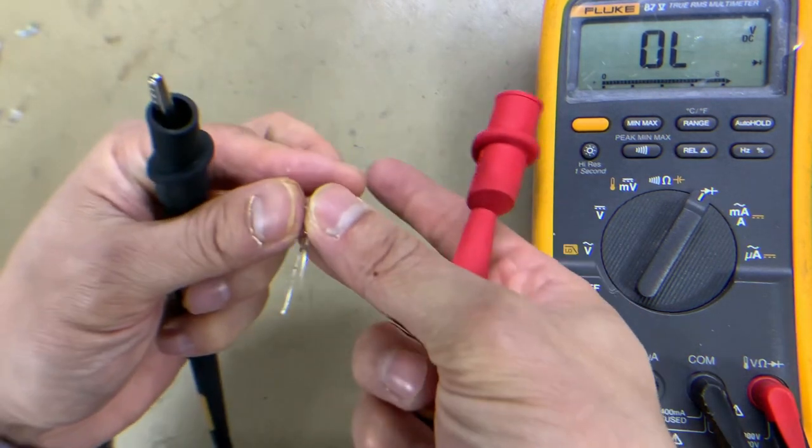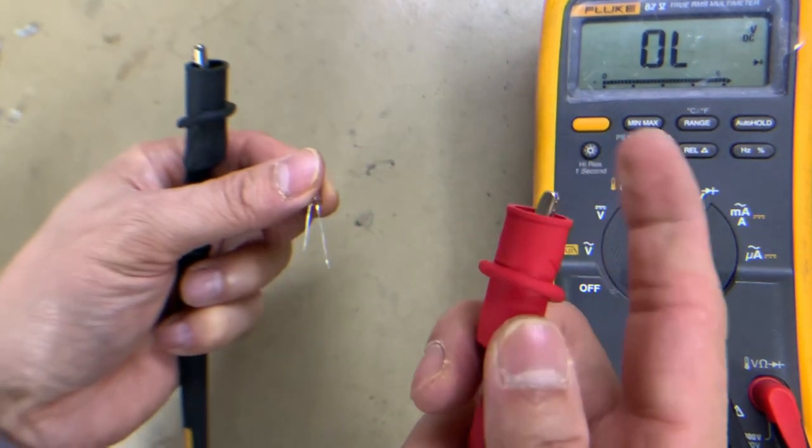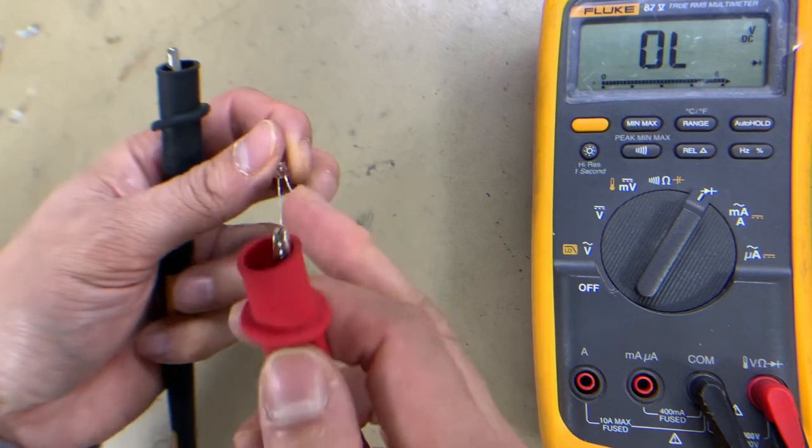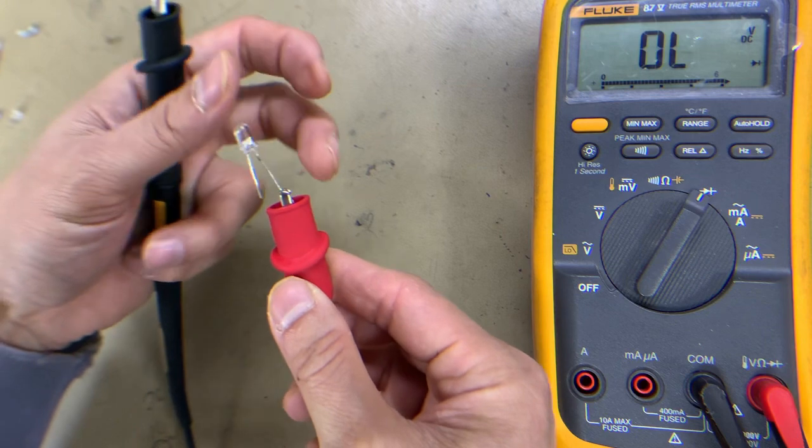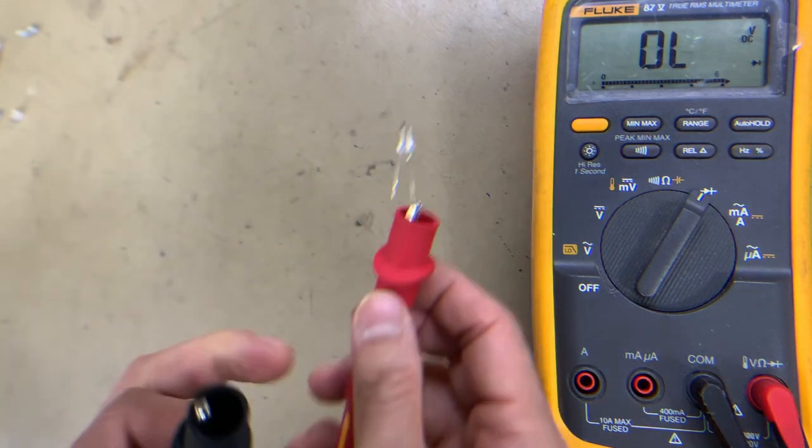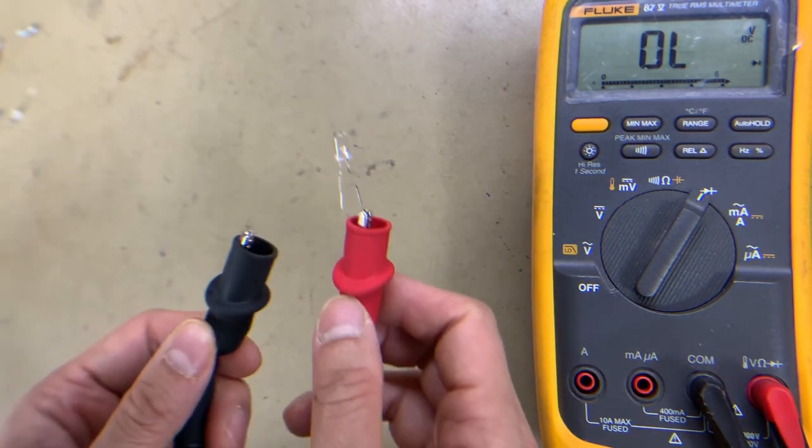Connect the red test probe to the anode and the black test probe to the cathode.